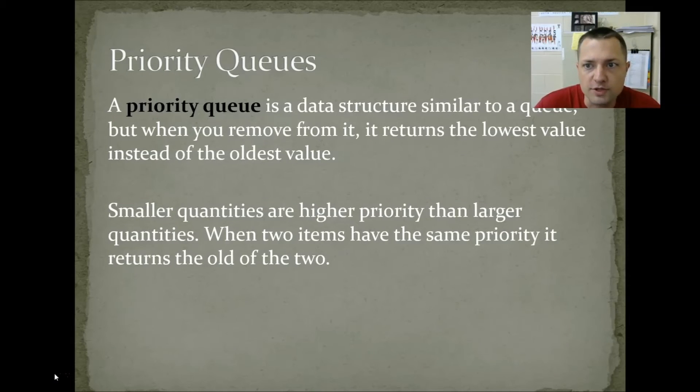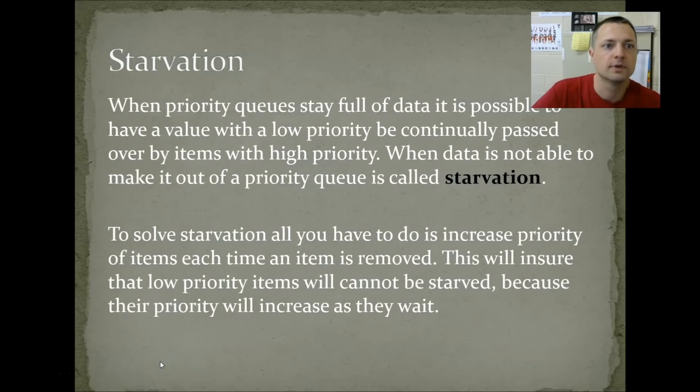Priority queues. A priority queue is a data structure similar to a queue, but when you remove from it, it returns the lowest value instead of the oldest value. Smaller quantities are higher priority than larger quantities. When two items have the same priority, it returns the older of the two. Starvation. When priority queues stay full of data, it's possible to have a value with a low priority be continually passed over by items with a high priority. When data is not able to make it out of the priority queue, this is called starvation. To solve the starvation problem, all you have to do is increase the priority of items each time an item is removed. This will ensure that low priority items cannot be starved, because their priority will increase as they wait.